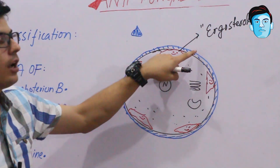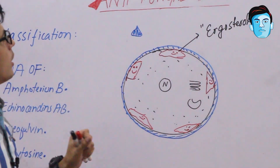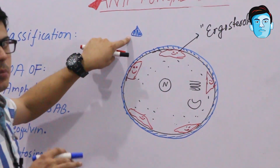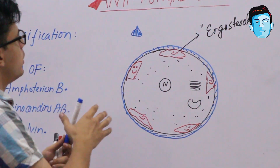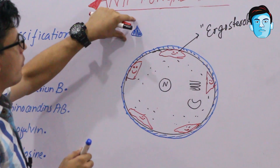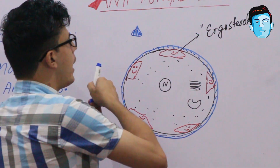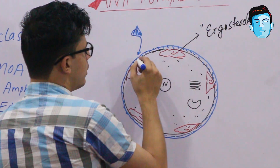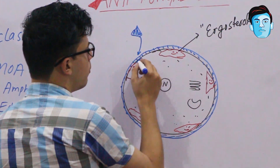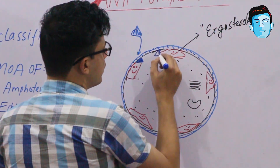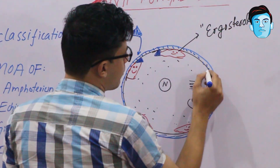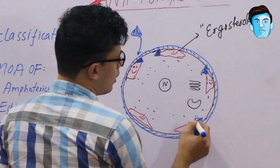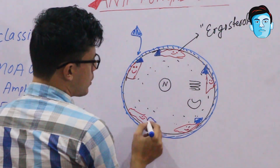When amphotericin B is given to a patient, it binds to these ergosterol molecules present on the fungal cell membrane. Amphotericin B gets bound to the ergosterol.